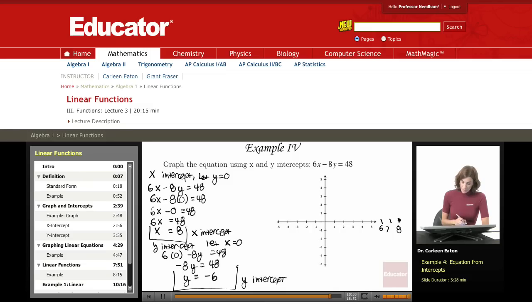Okay, so that means that my y-intercept is going to be down here at negative 6. So my x-intercept is here, my y-intercept is here, and now that I've got two points, I can graph this line.